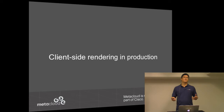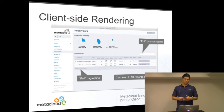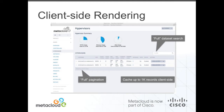First I wanted to start by showing some of the features that we've implemented using AngularJS and client-side rendering. These features are currently running in production. This screen here is the hypervisors panel in Horizon. You can see a list of all the hypervisors there. We've actually re-implemented this screen entirely using AngularJS, so all of this information is rendered on the client-side.